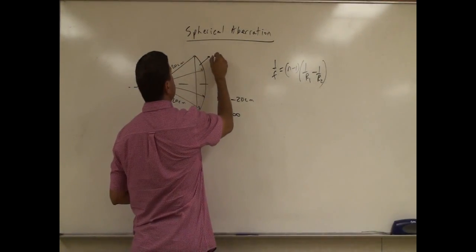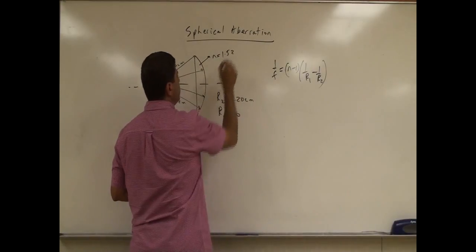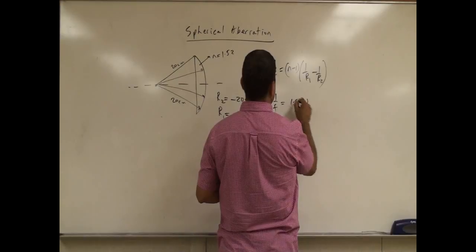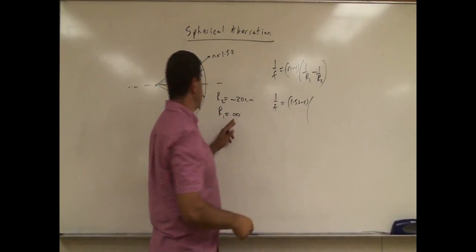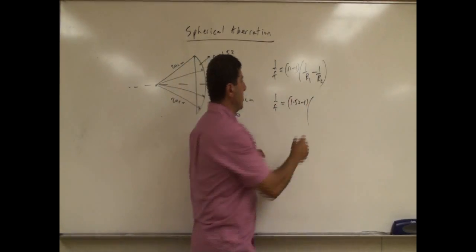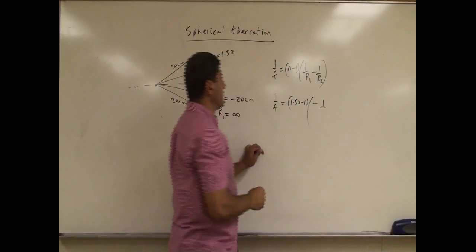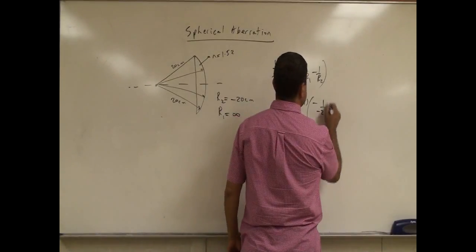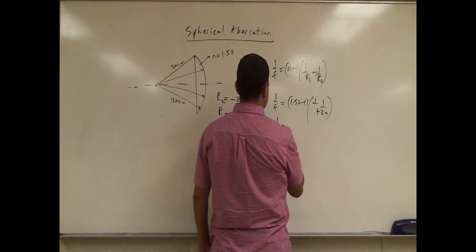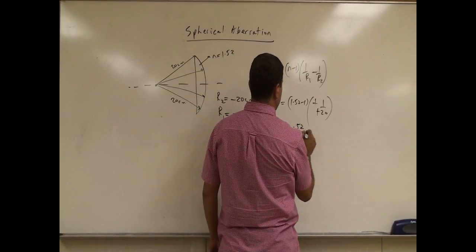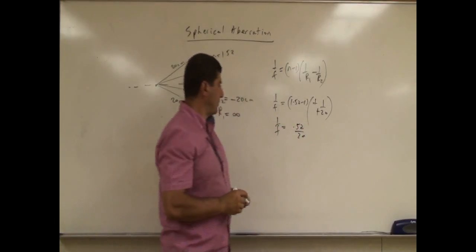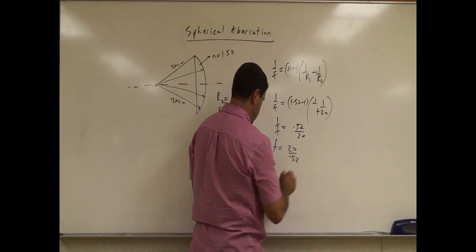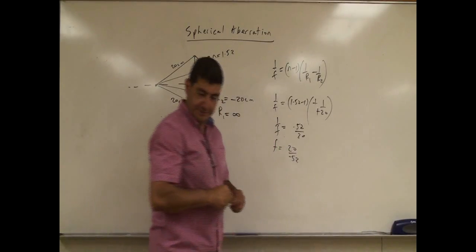Let's say the index of refraction is 1.52. So you have 1 over f equals 1.52 minus 1, r1 is infinity so that term disappears, and then minus 1 over r2 which is negative 20. So 1 over f equals 0.52 over 20, meaning the focal length is 20 over 0.52.